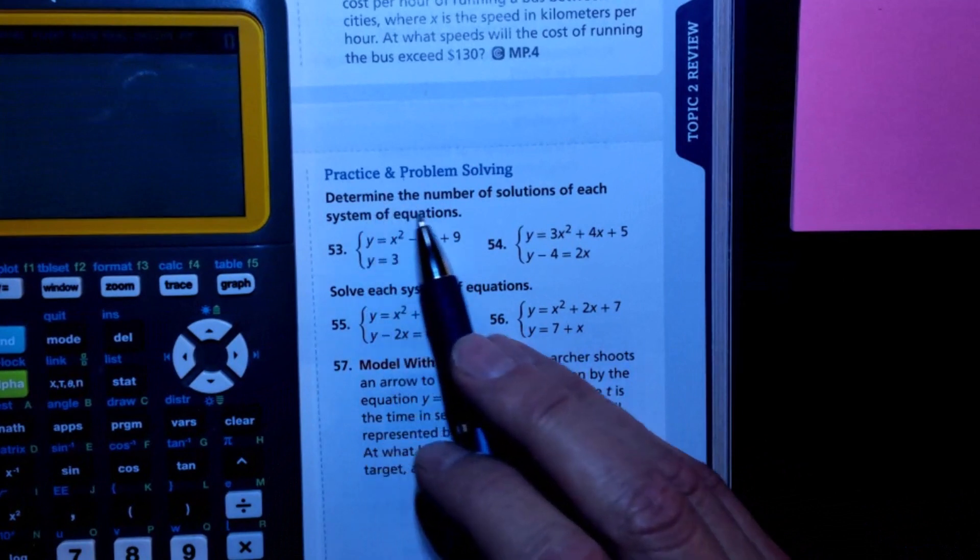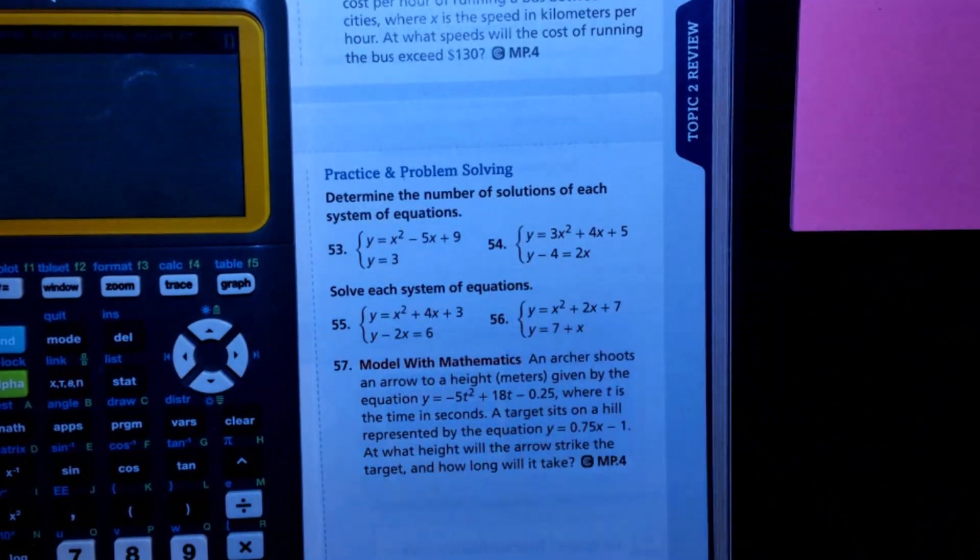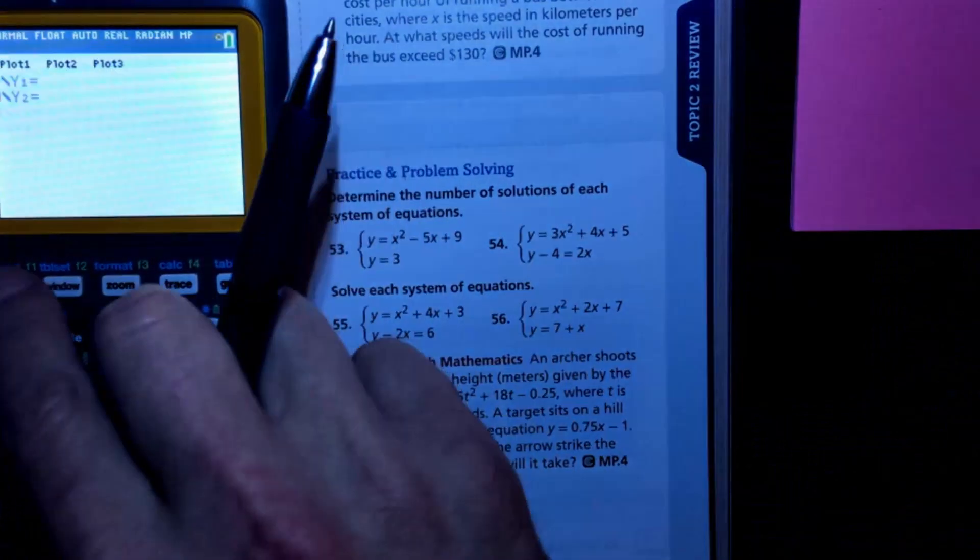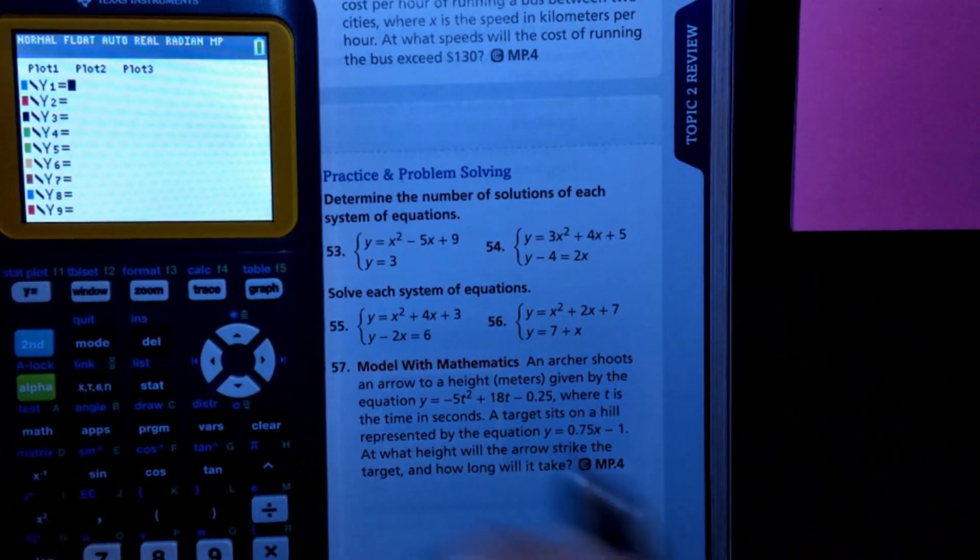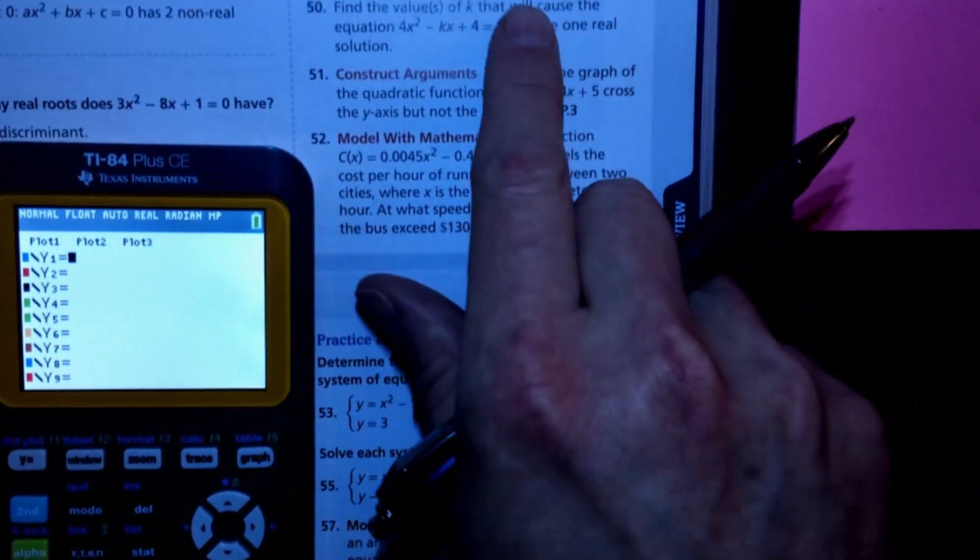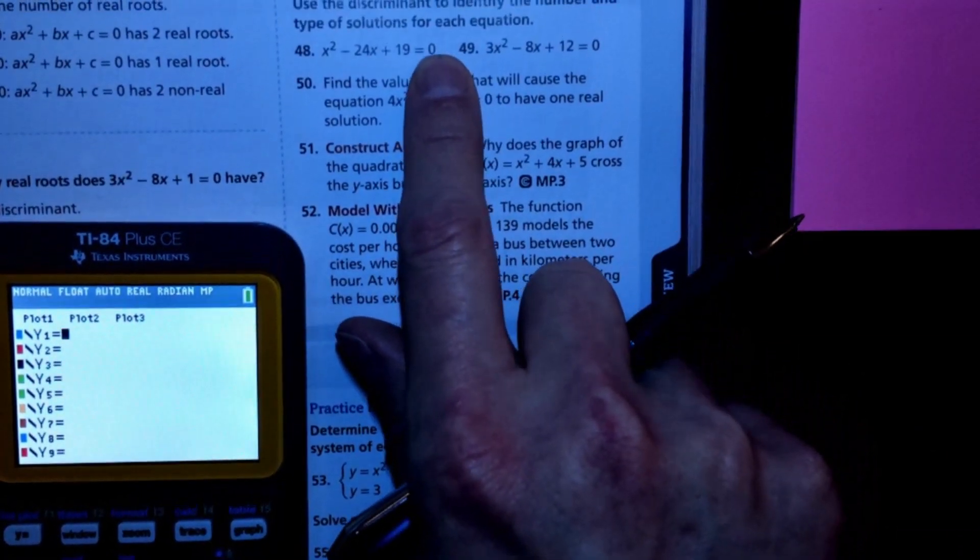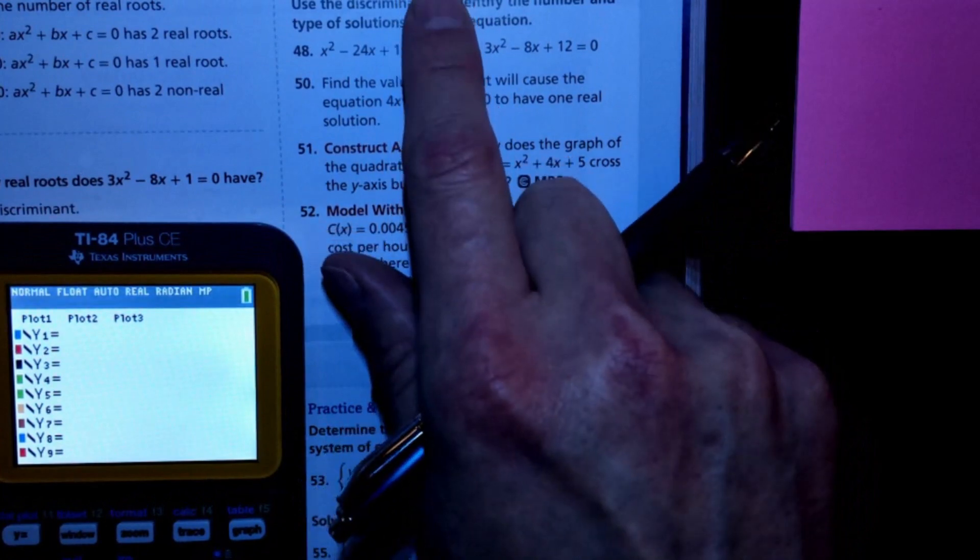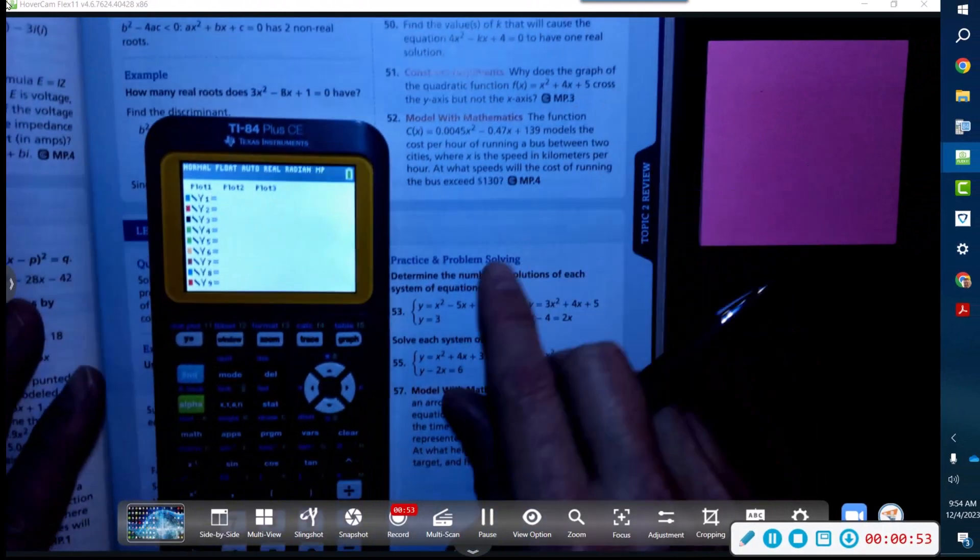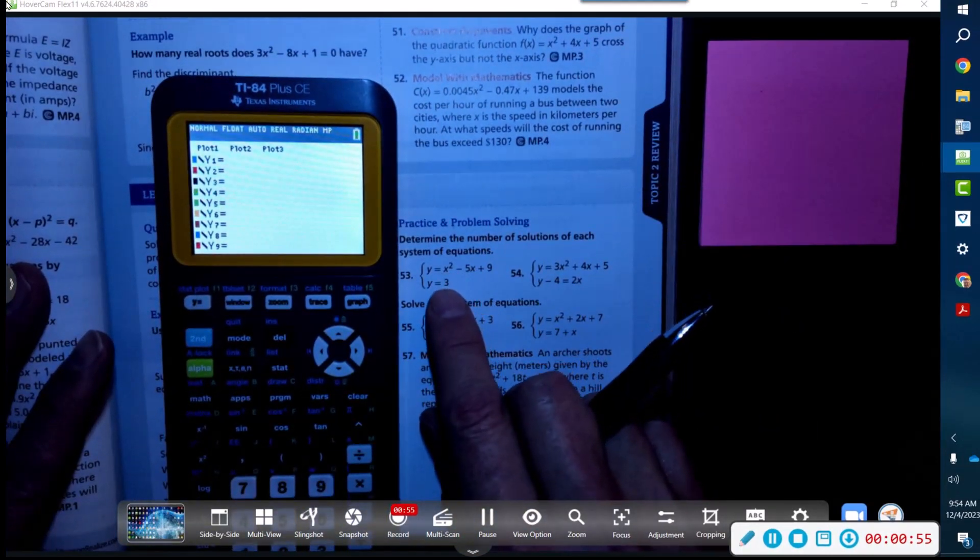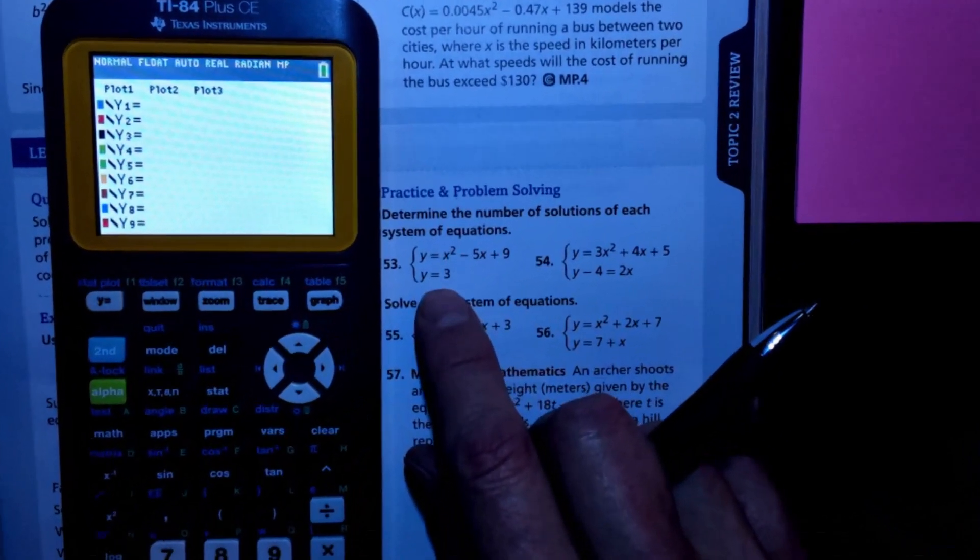Now look, it says determine the number of solutions, so all they're looking for is intersections. Remember, solutions involve being able to see where the intersections are. If they ask for solutions, we've already set it equal to zero, so that means where does it intersect the x-axis. But here we say where do these guys intersect each other.